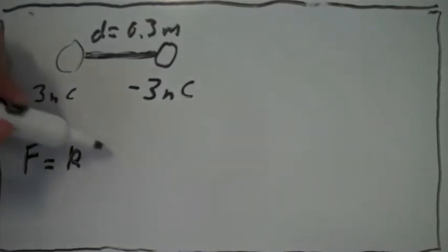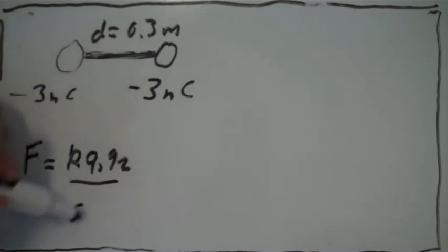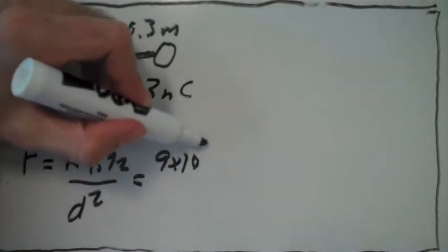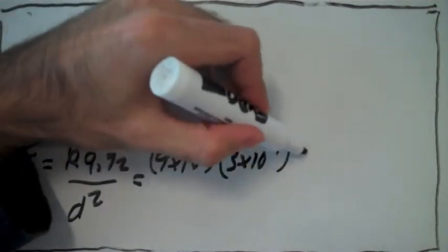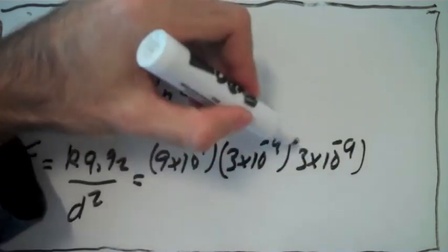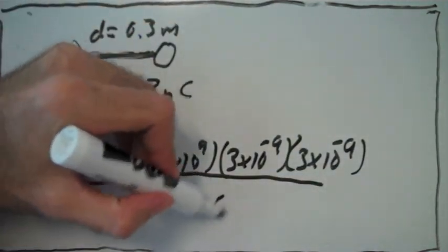The total force is given by k times the charge of each one divided by the distance squared. If we plug in the numbers, we get these values, and the distance between them is still the same.